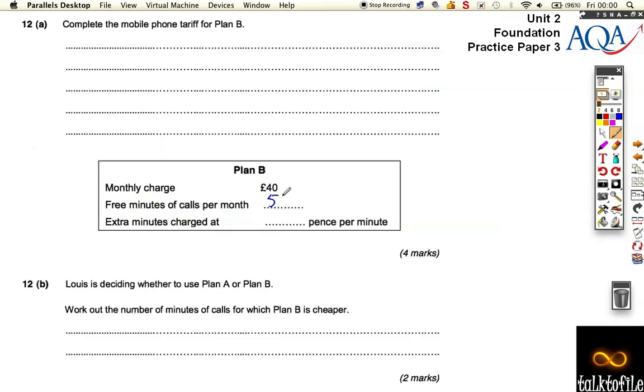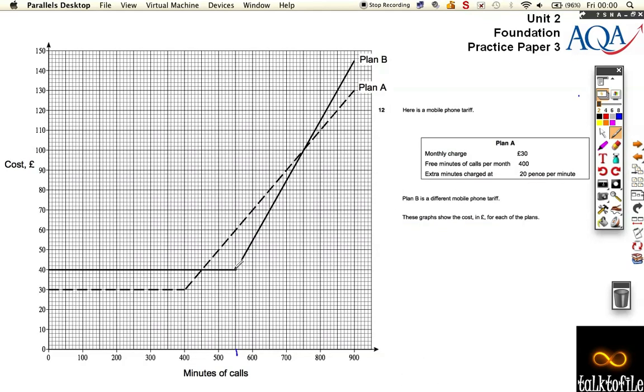Now we need to work out how much the extra minutes are. Well, the best thing to do is to go up 100 or go across a number of squares and see how many go up nicely.